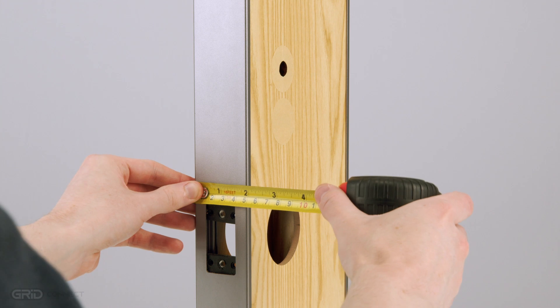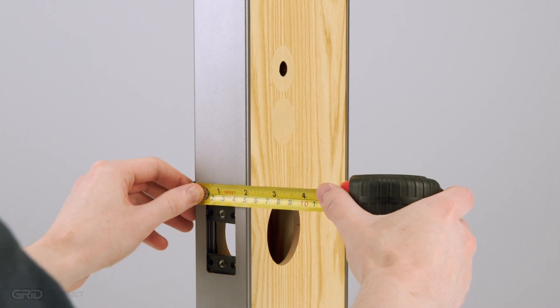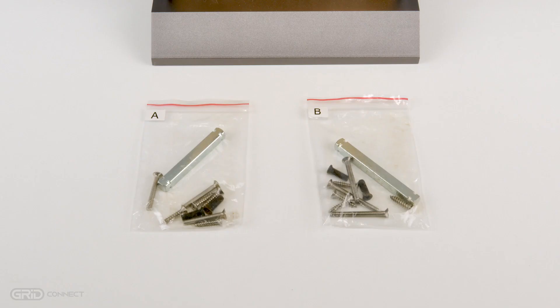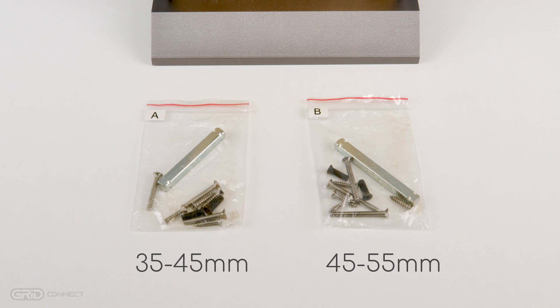Measure the thickness of your door which should be between 35 and 55mm thick. Choose the correct installation kit based upon the thickness of your door.